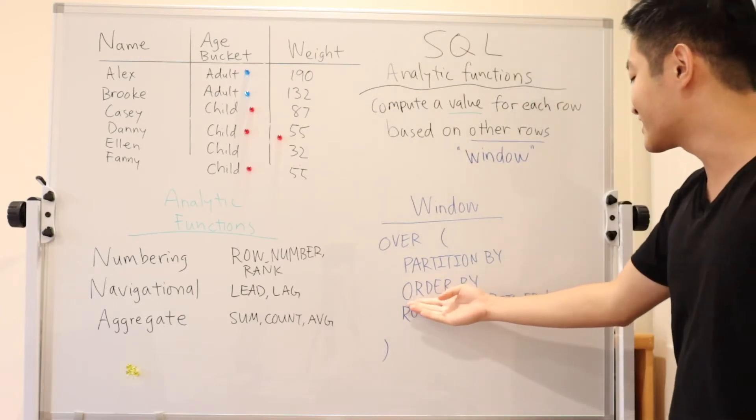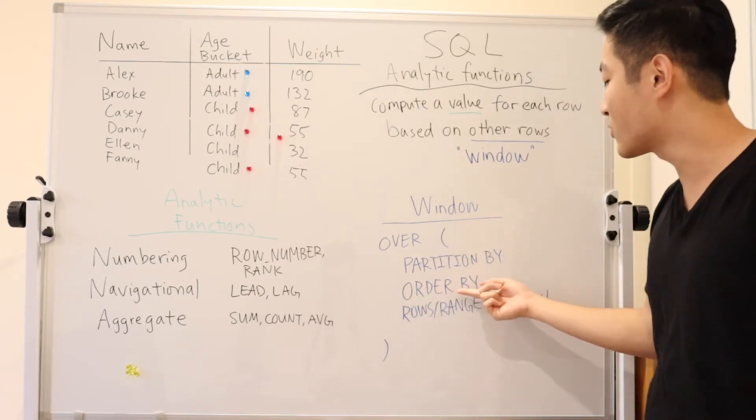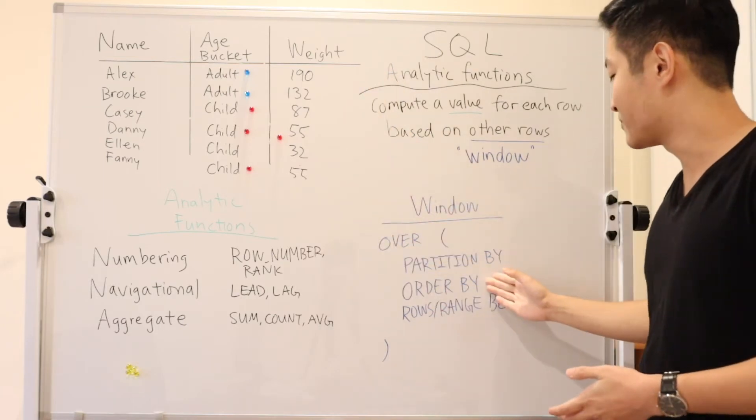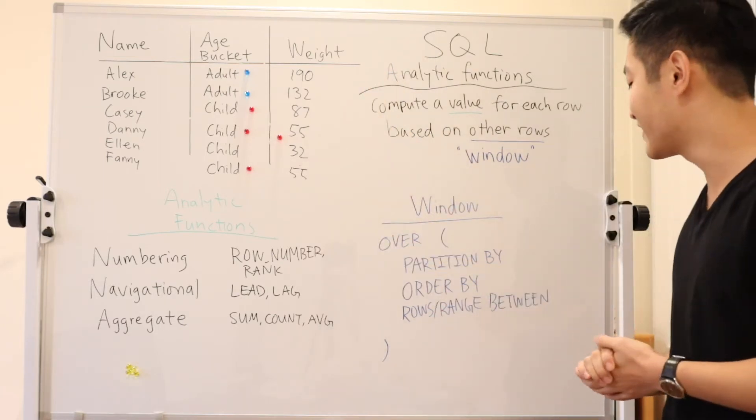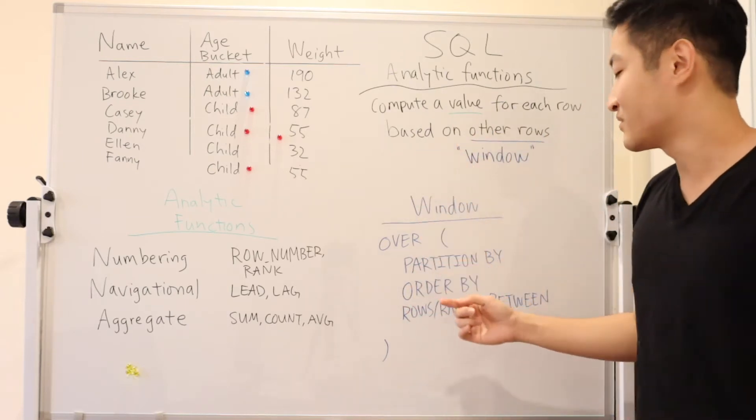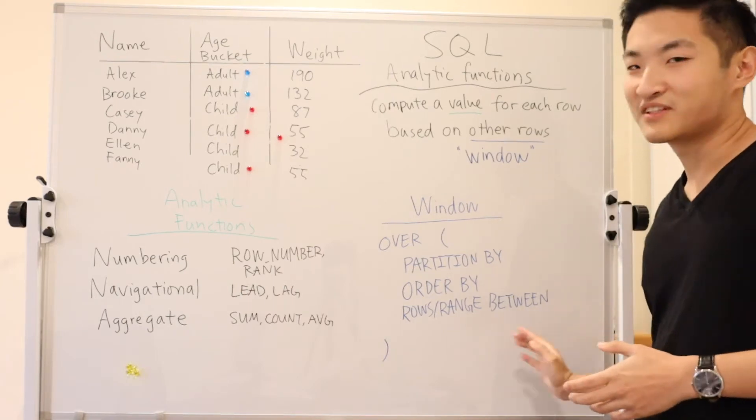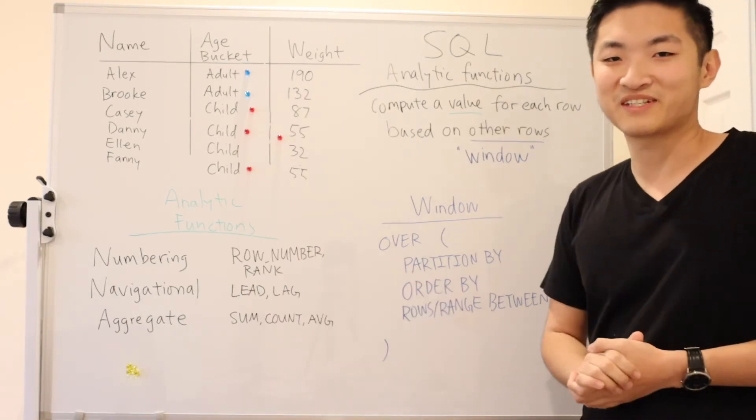Then the next thing you can do with a window is you can order by a particular value within that partition. And then finally, you can adjust the size of your window using rows or range. So these are all the keywords you'll need to know. Let's dive into some examples.